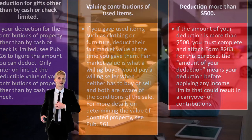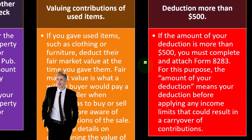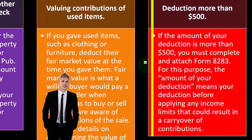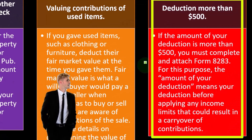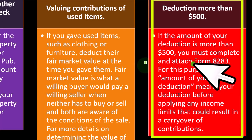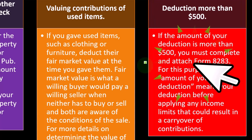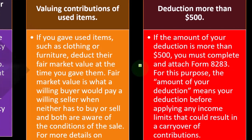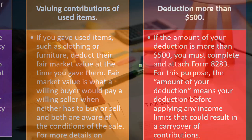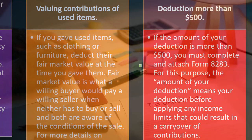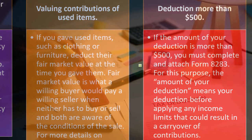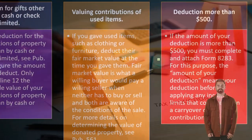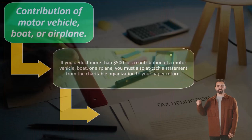Deduction more than $500. If the amount of your deduction is more than $500, you must complete and attach Form 8283. For this purpose, the 'amount of your deduction' means your deduction before applying any income limits that could result in a carryover of contributions.